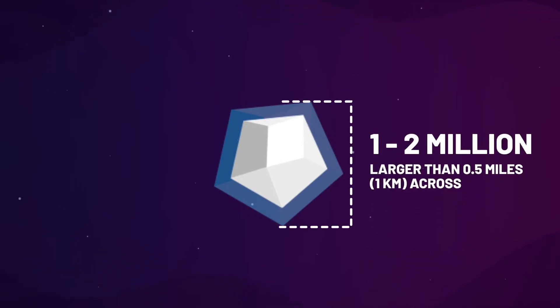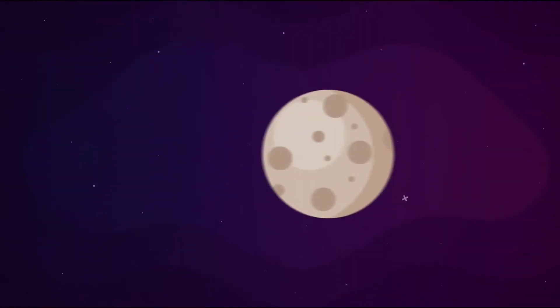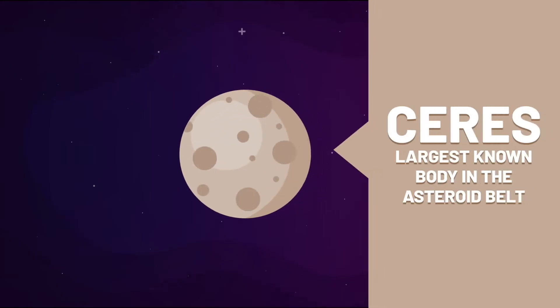Some 1 to 2 million asteroids larger than half a mile across dwell in the asteroid belt, including Ceres, the largest known body in the asteroid belt, measuring nearly 600 miles across.